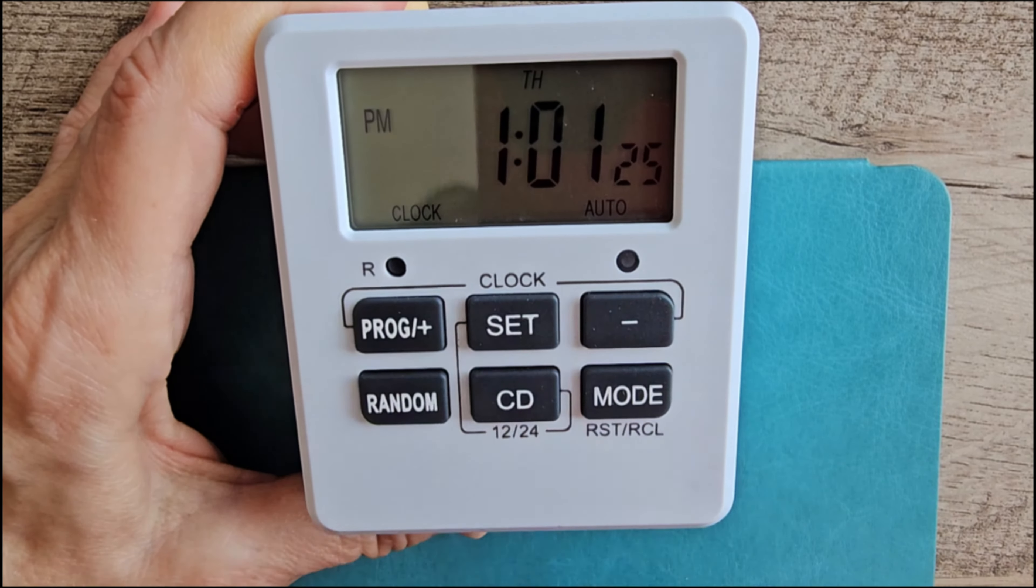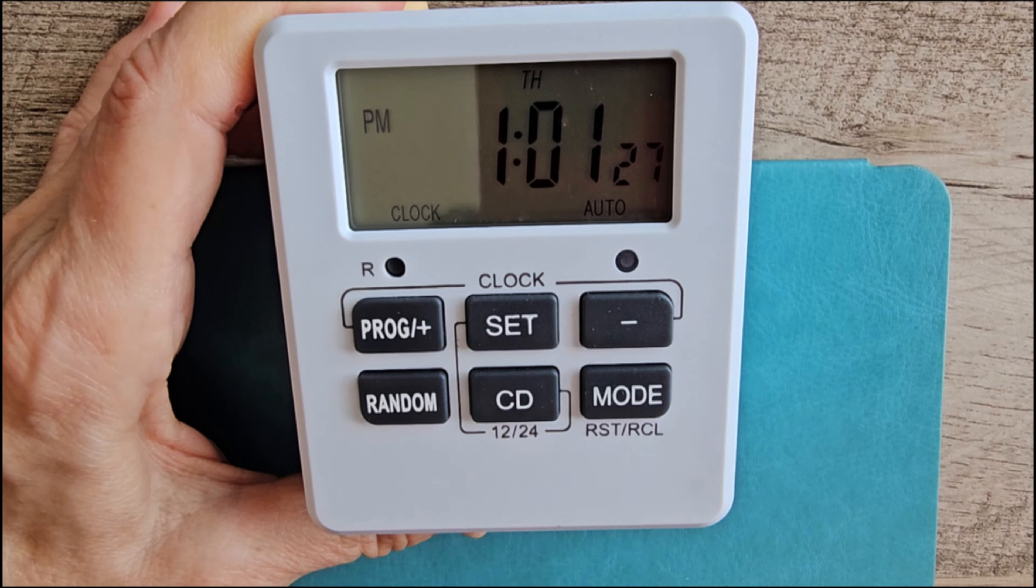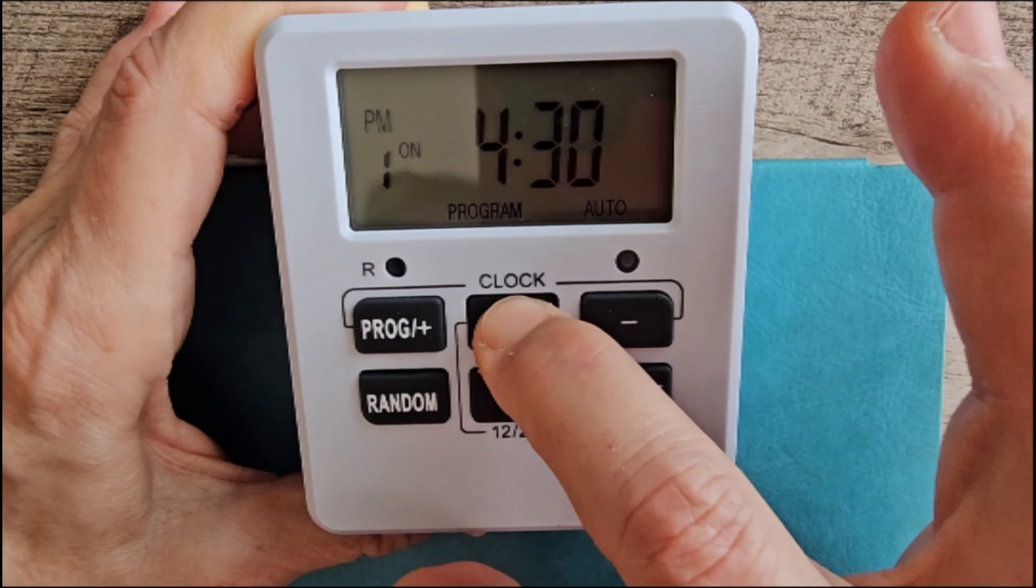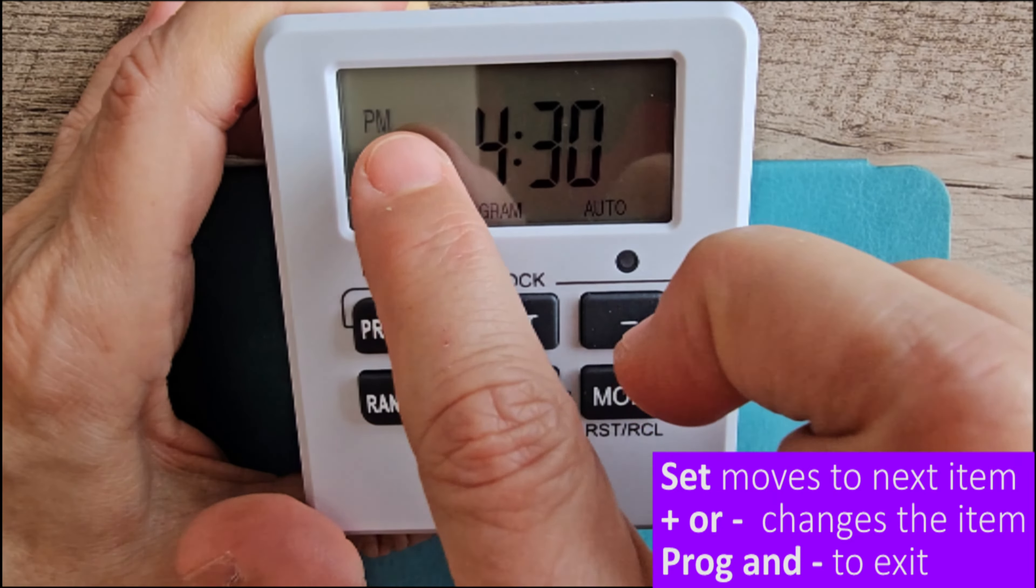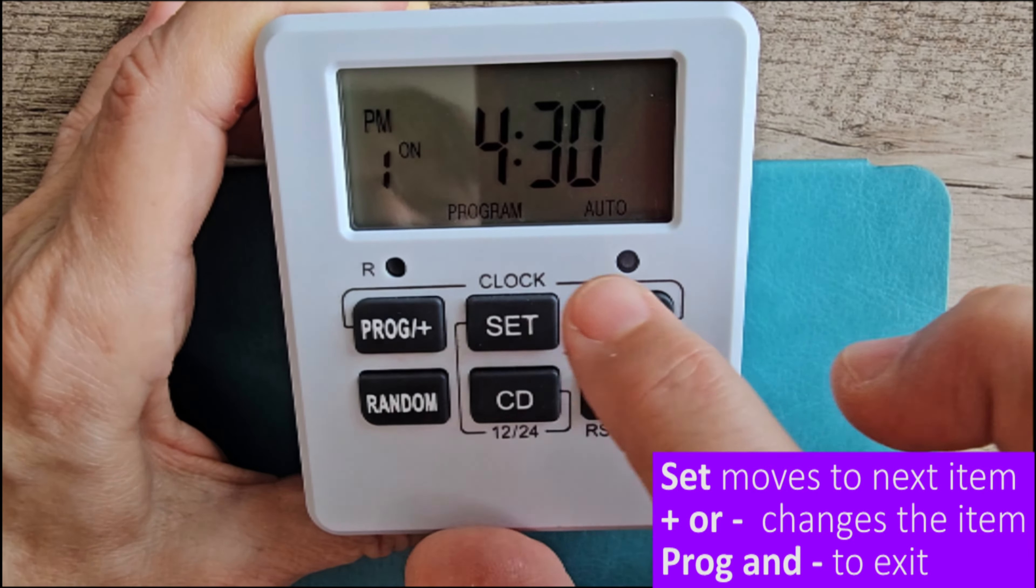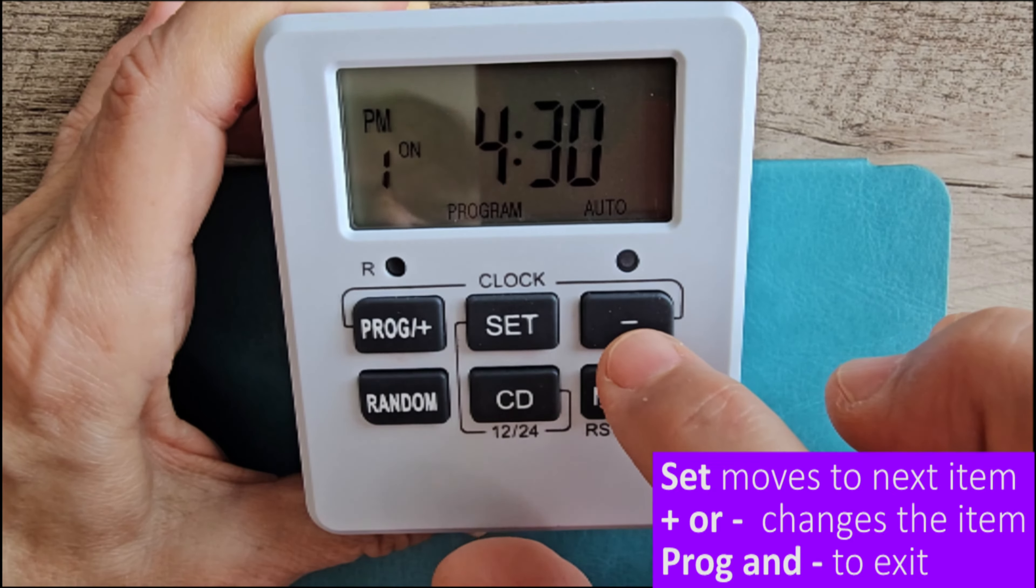We can program up to 10 on and off events. Use the program button to go through them. One on, one off, two on, two off. You can go all the way through to 10. To get back out at any time, press program and minus at the same time.